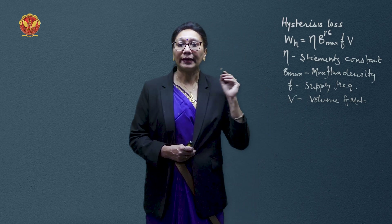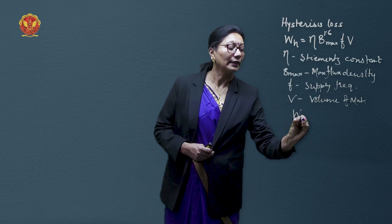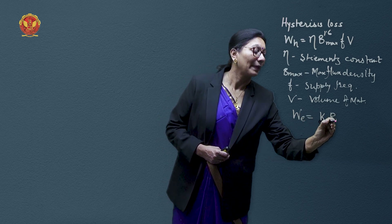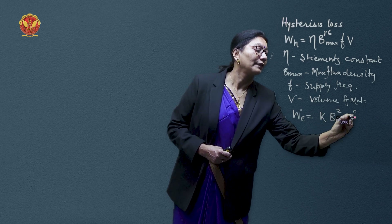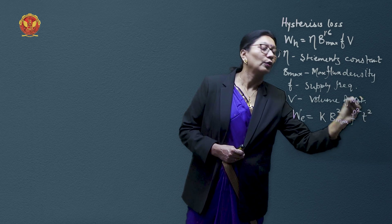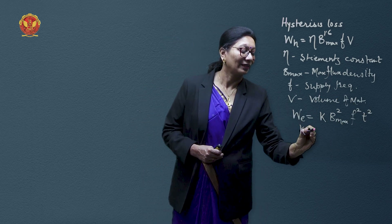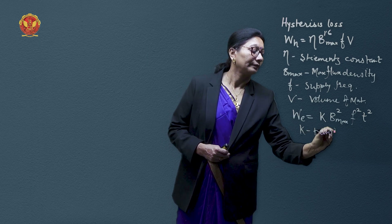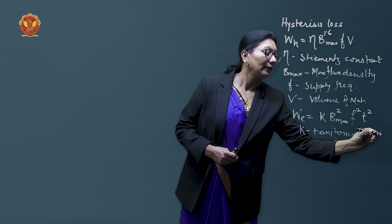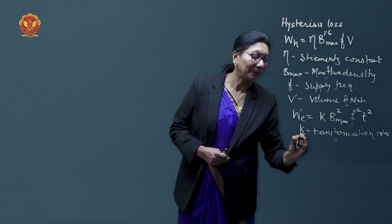We can represent eddy current losses by the expression: We = K × Bmax² × f² × t², where K is a constant and T is the thickness of the core laminations.